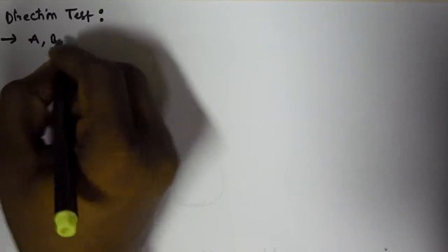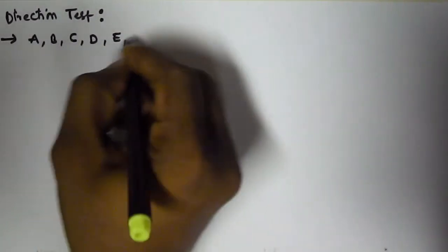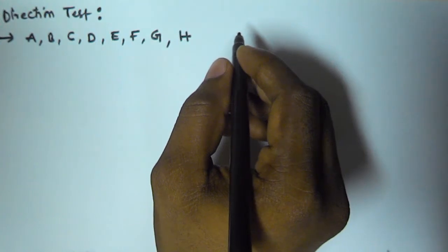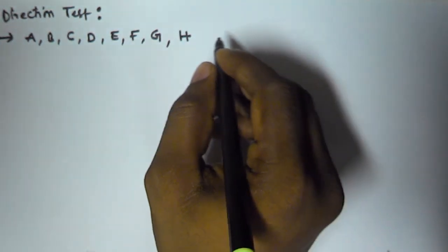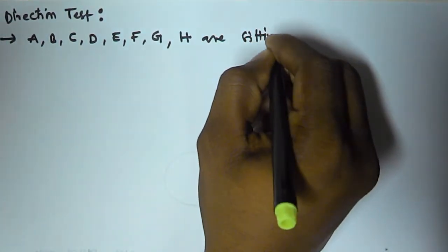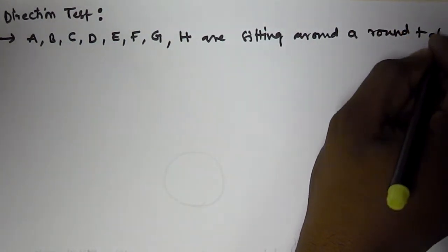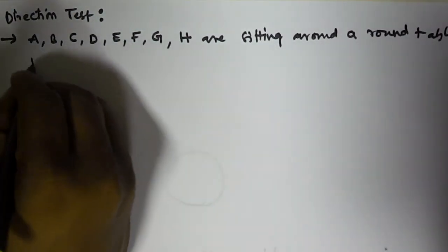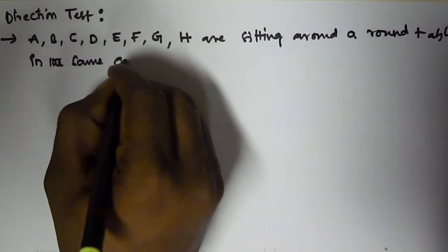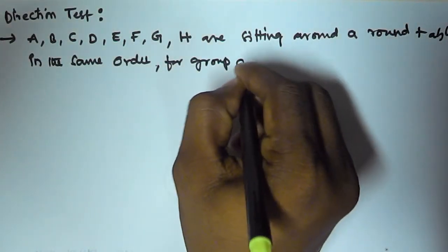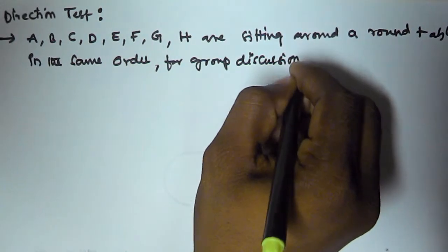Hello friends, in this video we will see a problem based on direction. The problem is: there are 8 people — A, B, C, D, E, F, G and H — sitting around a round table in the same order for group discussion, at equal distances.